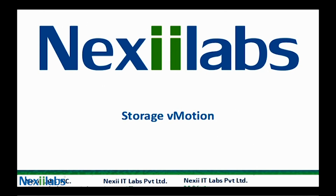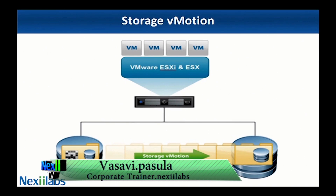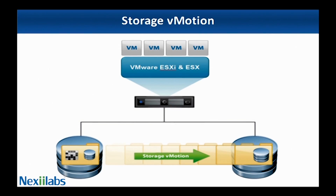Welcome back. With Storage vMotion, you can migrate a virtual machine and its disk files from one datastore to another while the virtual machine is still running. You can choose to place the virtual machine and all its disk files in a single location, or select separate locations for the virtual machine configuration file and virtual disk files. The virtual machine does not change execution hosts during the migration.